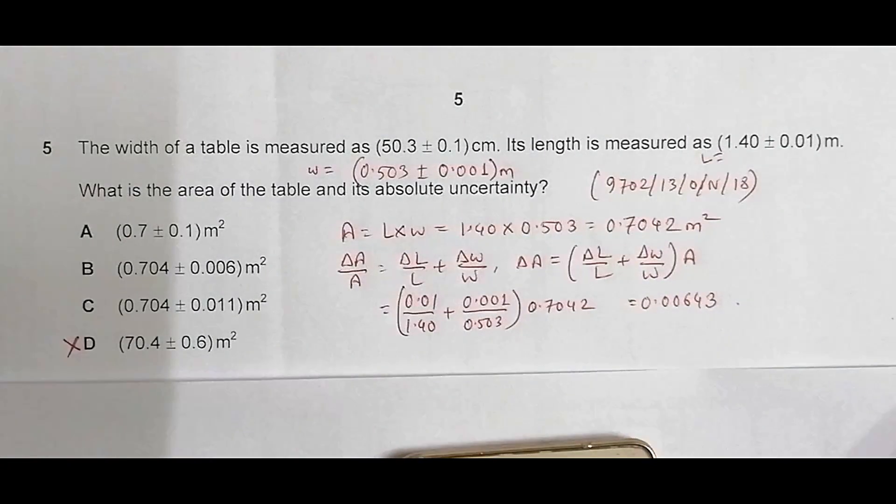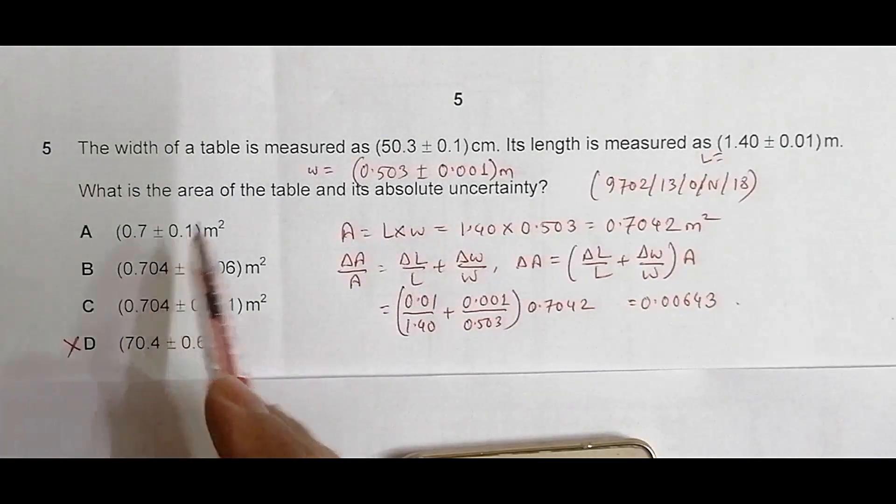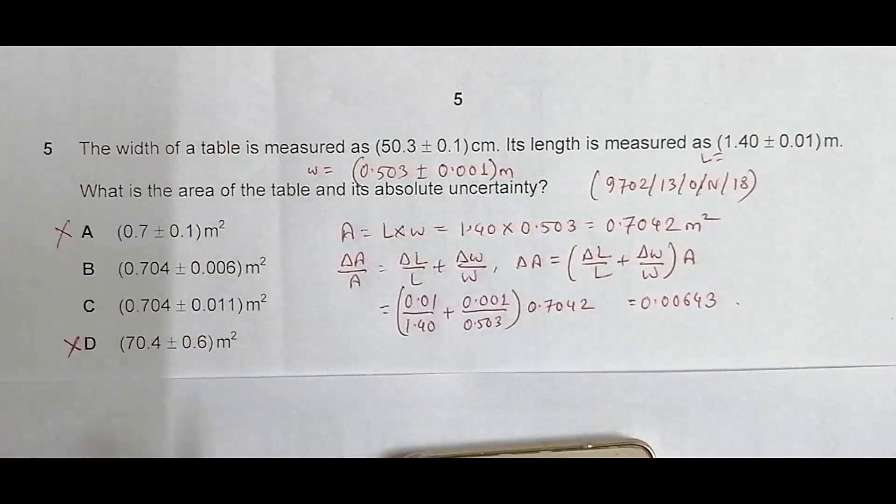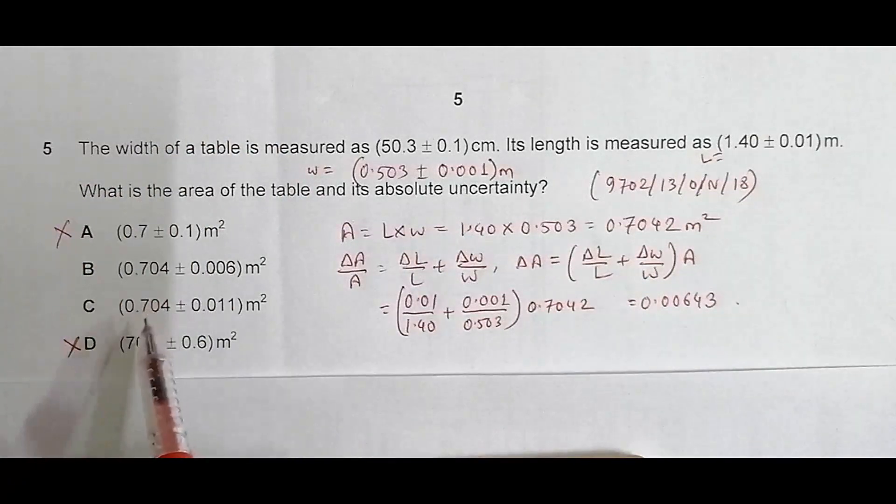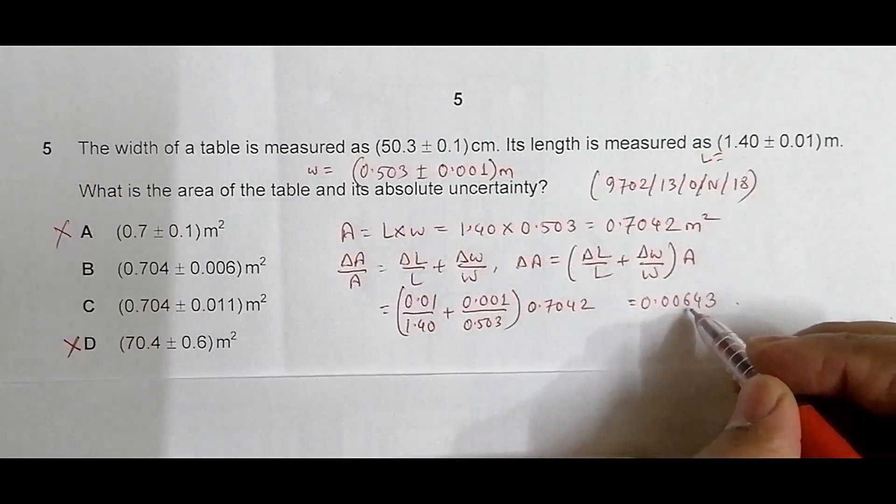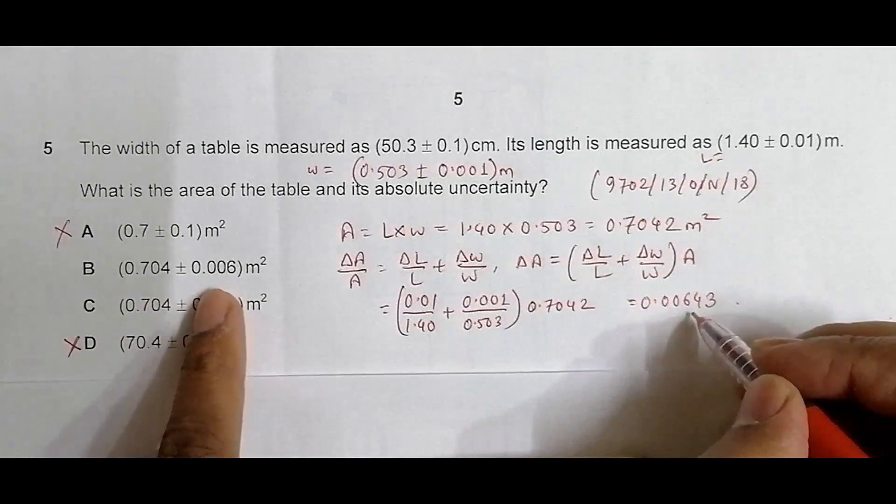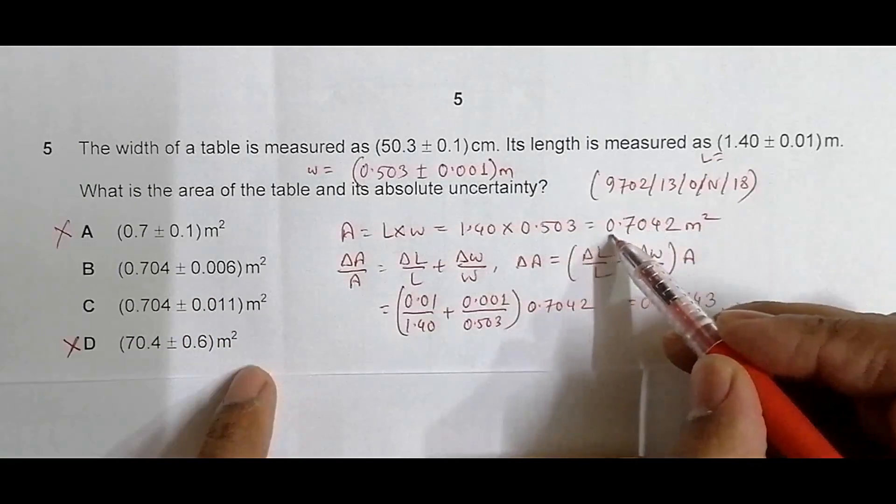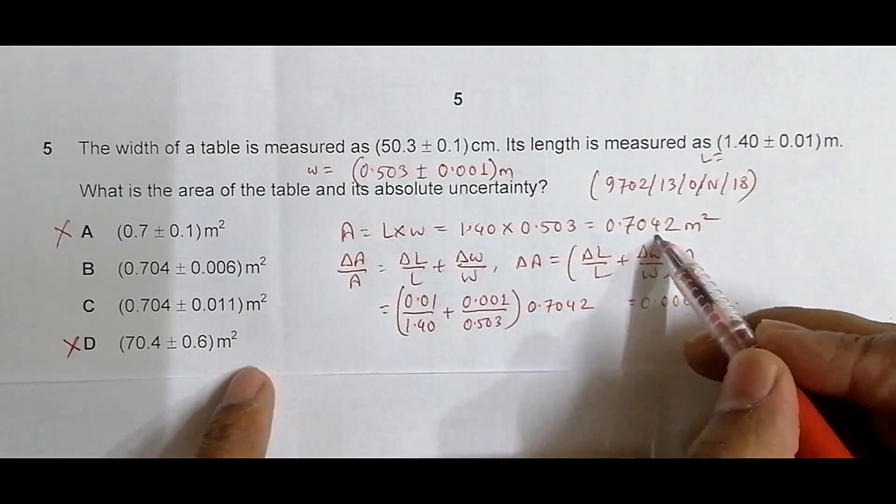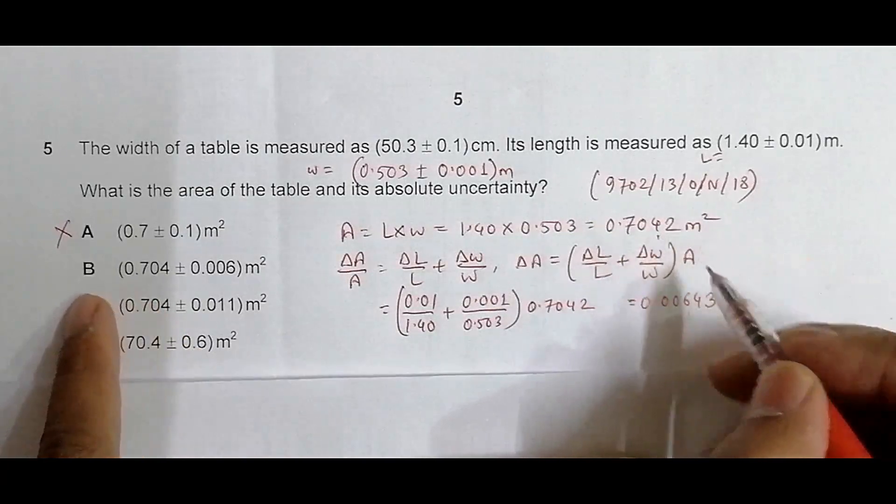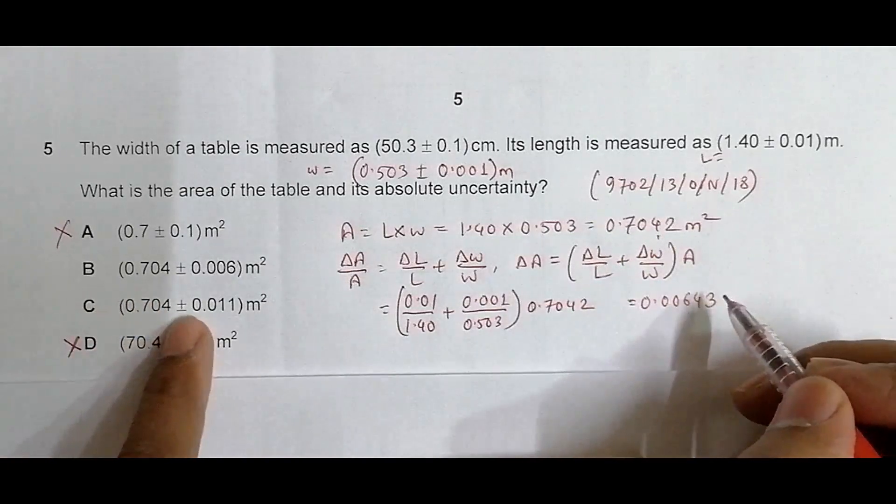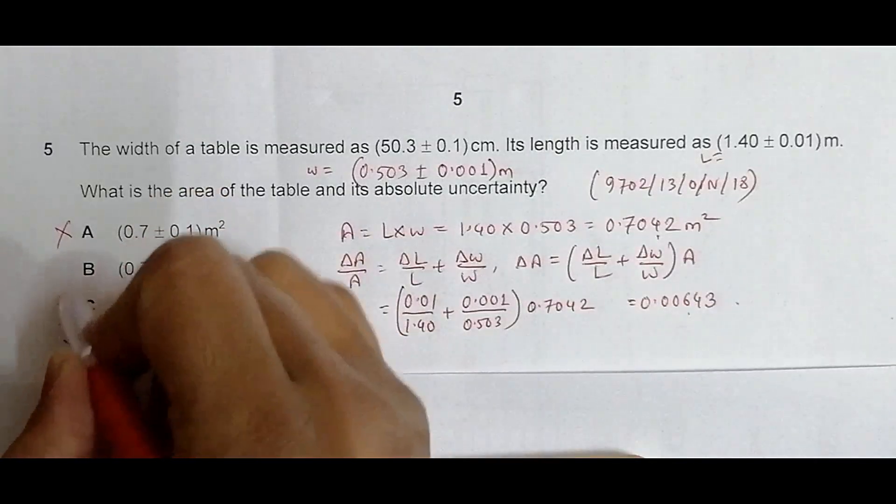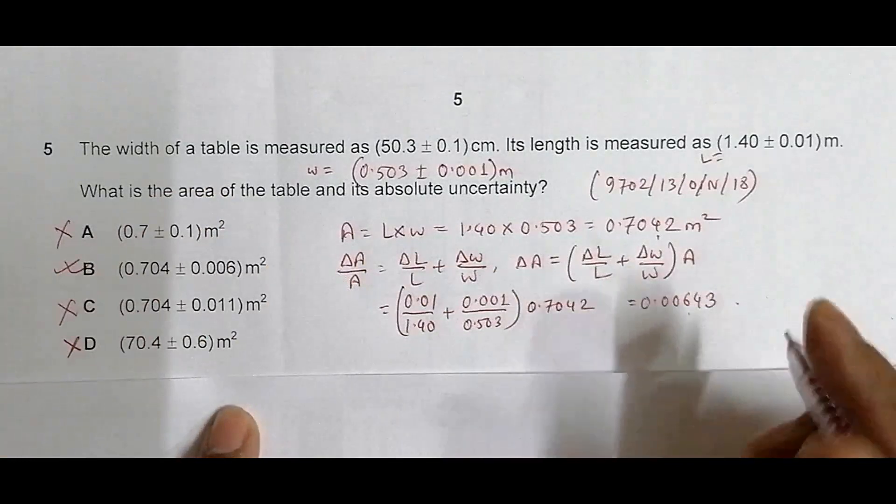Now with that, let me go on disqualifying. Choice A disqualifies because it says 0.1 whereas the uncertainty starts from the third digit of the decimal. Choice B seems to be okay because when we express the error in one SF it is 0.006, and the answer is written up to the third decimal. Choice C says 0.0011 which is nowhere near, so this also disqualifies. The correct choice is choice B.